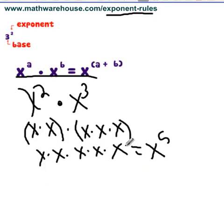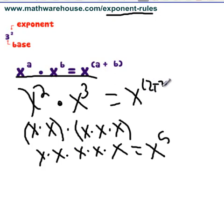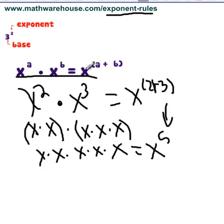There's one, two, three, four, five x's. So what did we do to the two and the three? We added them. x to the two plus three is our answer, x to the fifth. That is the explanation behind why x to the a times x to the b equals x to the a plus b.